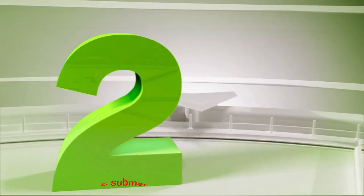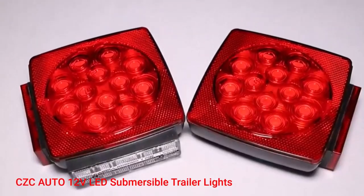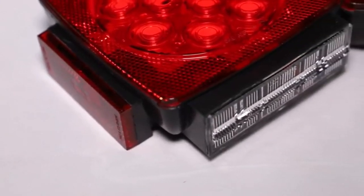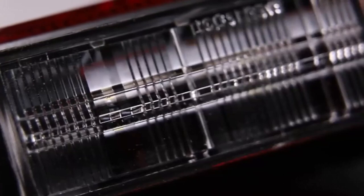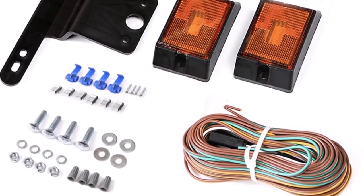Number 2: CZC Auto 12V LED Submersible Trailer Lights. Exceptional brightness combined with tough and sturdy construction is the main thing separating the CZC Auto trailer lights from the competition.